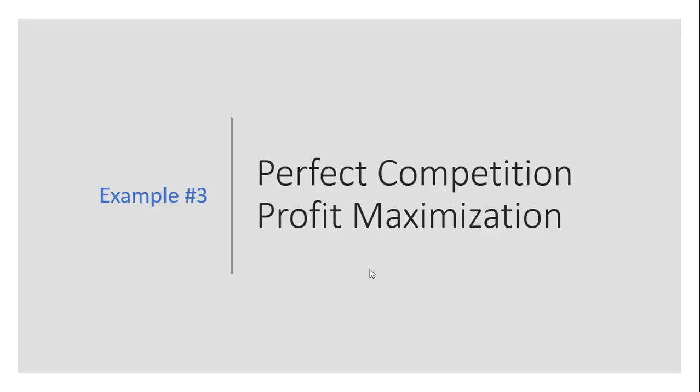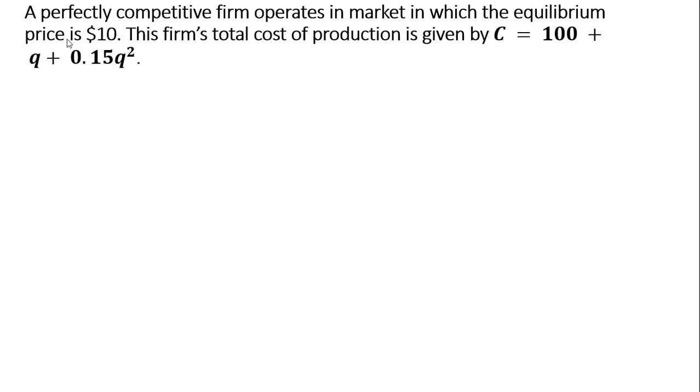Here's going to be an example of profit maximization for a perfectly competitive firm. Our problem, we have a perfectly competitive firm operating in a market in which the equilibrium price is $10.